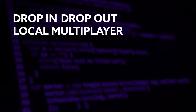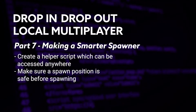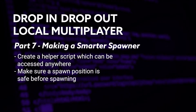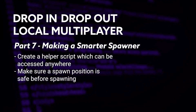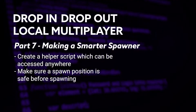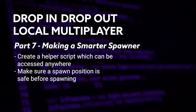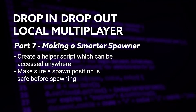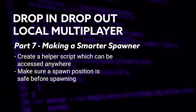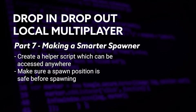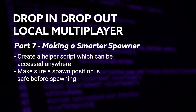In part 7, we're going to be making a smarter spawner. We're going to create a helper script which can be accessed from any other script, and that's going to make sure a spawn position is safe before spawning a coin — to avoid coins spawning inside each other, the walls, or the player. And that spawn script can be used for anything, not just coins, because we're putting it in a static helper script.